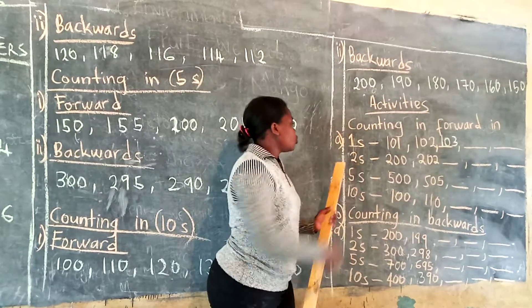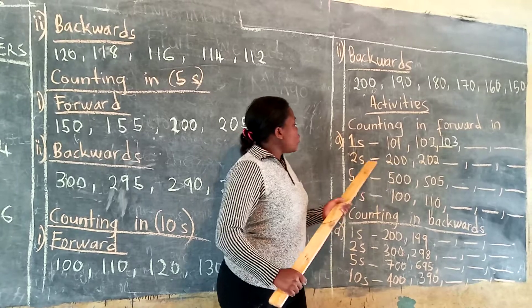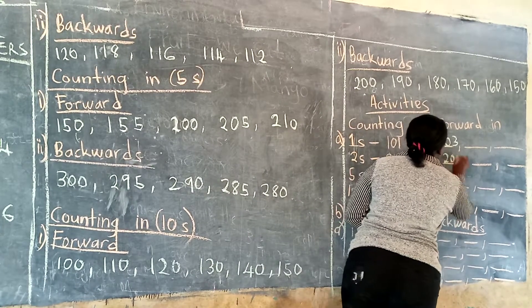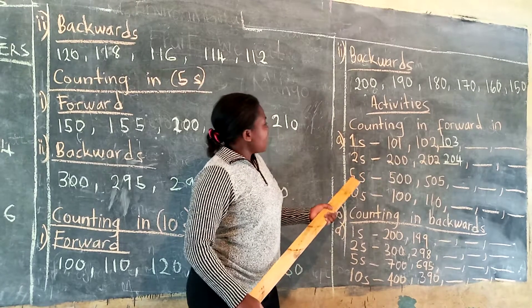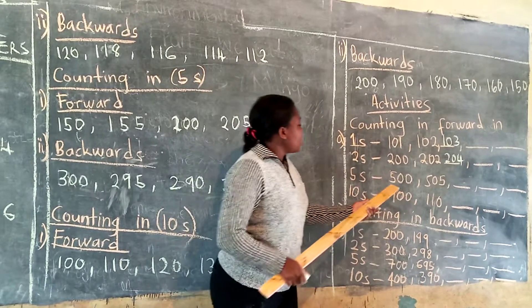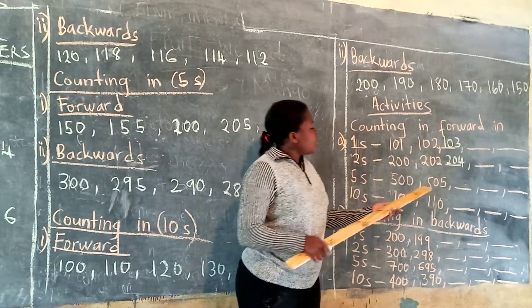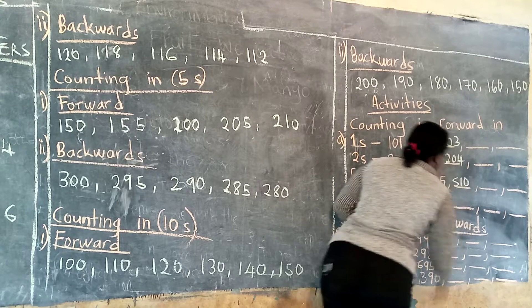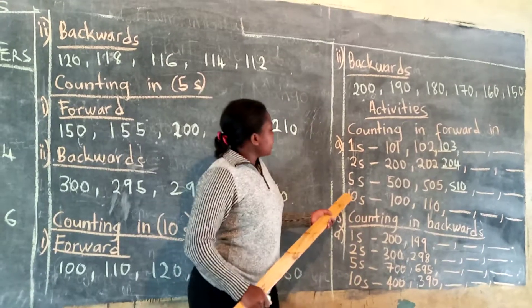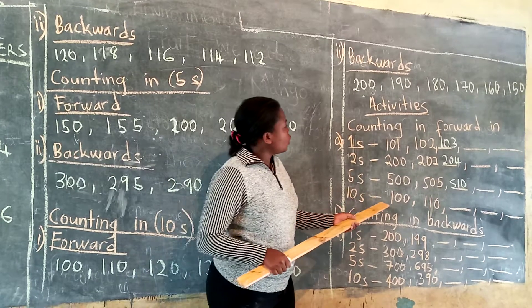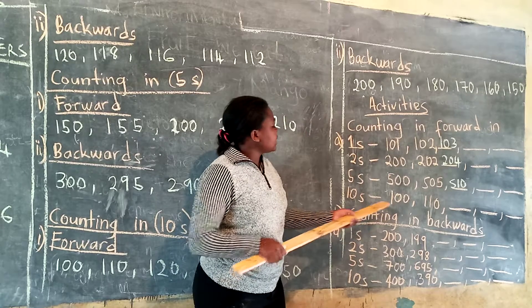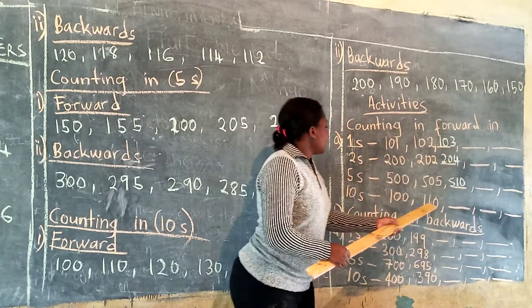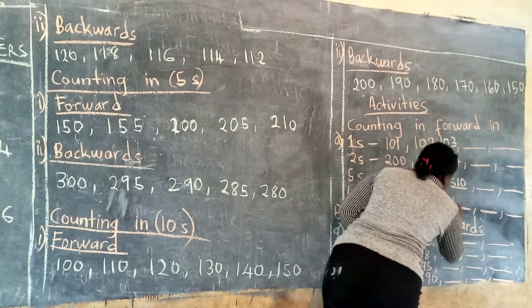Now counting forward in twos. There is 200. We add 200 plus 2, you'll get 202. Then 202 plus 2, the next number is 204. The next activity is counting in fives: starting at 500. 500 plus 5, you'll get 505. 505 plus 5, you add, you'll get 510. And you'll do the rest. Now counting in tens: 100 plus 10 will be 110. The next sequence: 110 plus 10, you'll get 120.